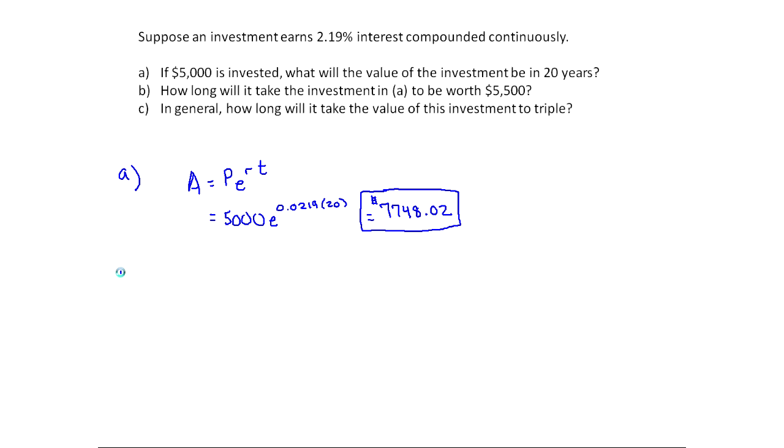Let's look at part B. How long will it take an investment to be worth 5,500 if you're investing 5,000? So we know the future value, A, would be 5,500. And we know initially you're investing 5,000. I'm using this formula right here. And so E, R, we know the rate is 0.0219, but we don't know T. So I need to solve for T.